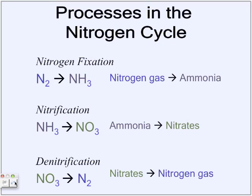Denitrification is when nitrates from the soil or from plants are turned back into nitrogen gas by denitrifying bacteria. So we start with nitrogen gas and end with nitrogen gas — that is how you can see it is a cycle, because it is cyclical and just keeps going on.